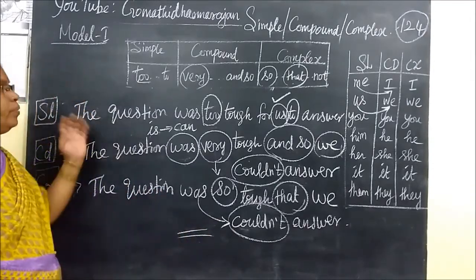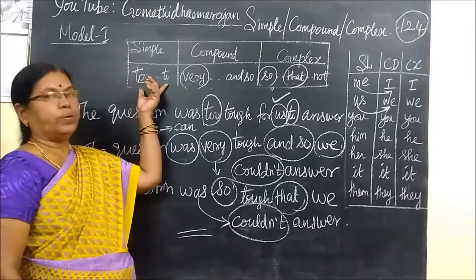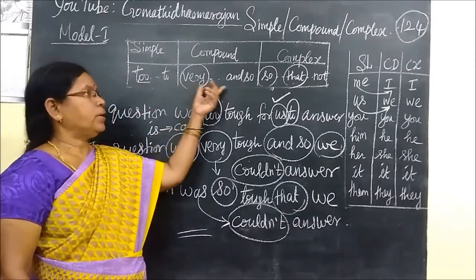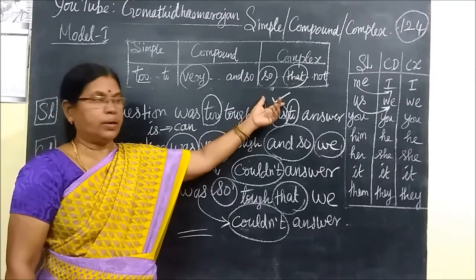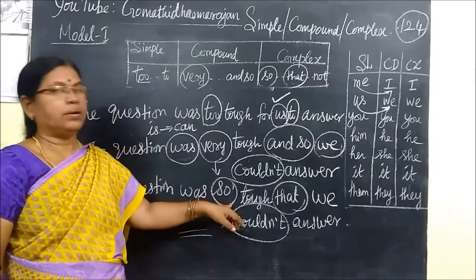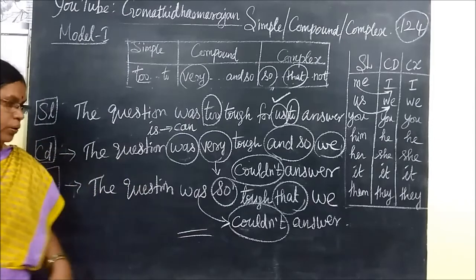So, under type 1, under model 1. In the 2 to 1, the compound sentence and complex sentence, every end of the form. And in the next class, we see type 2. Thank you.